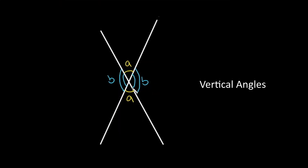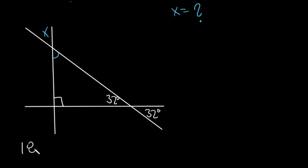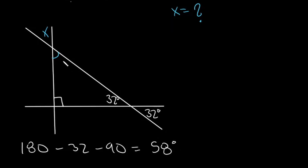Let's look at an example problem. We are given the angle 32 degrees in a right triangle and the angle X, and we are asked to solve for X. The first step is we can see that 32 is vertical to this angle, so this angle is also 32 degrees. Now we have two out of three angles of the right triangle. All three angles add up to 180, so we subtract 32 and 90, giving us 58 degrees. This angle is vertical to angle X, so X is also equal to 58 degrees.